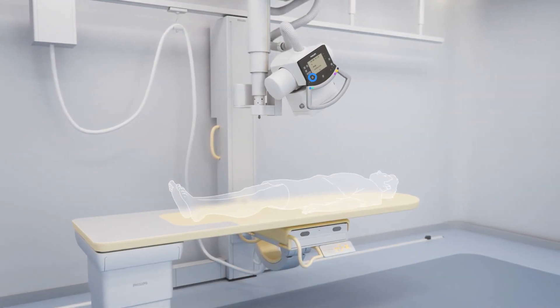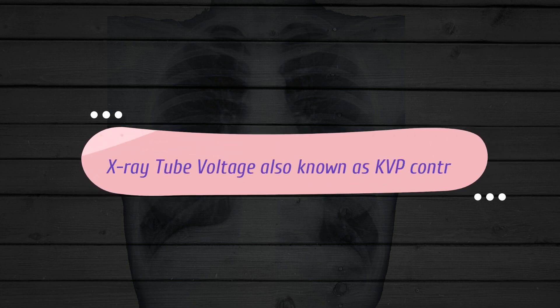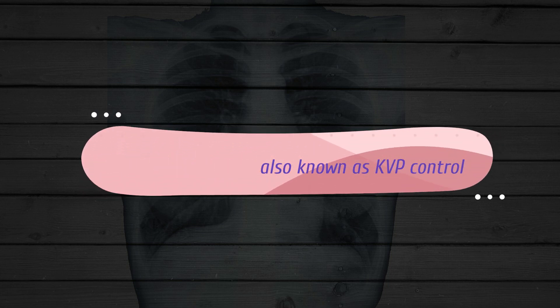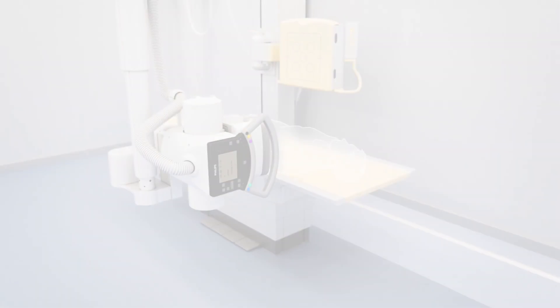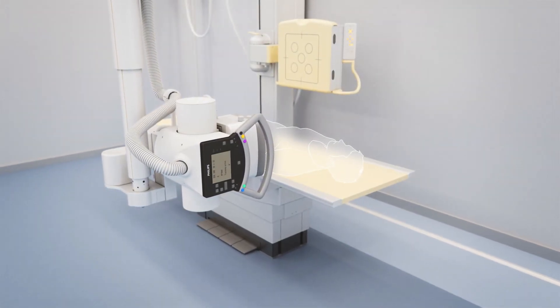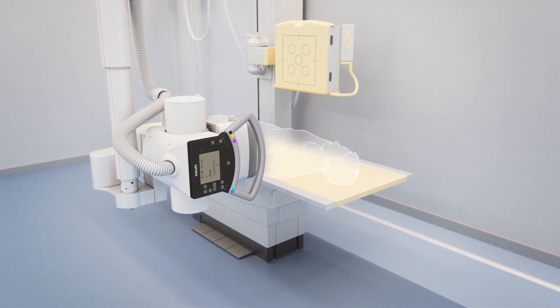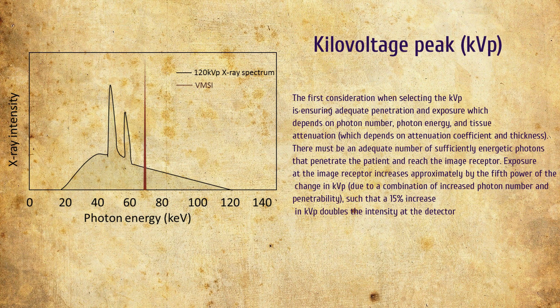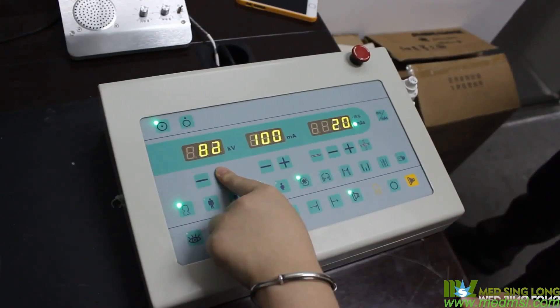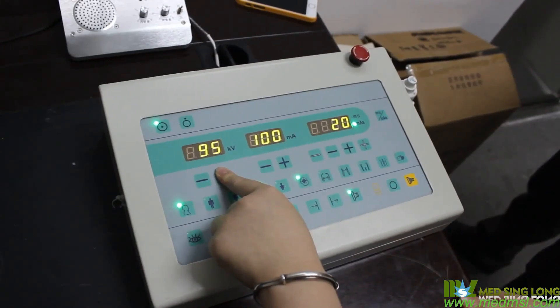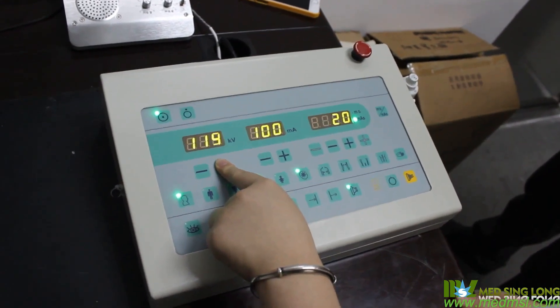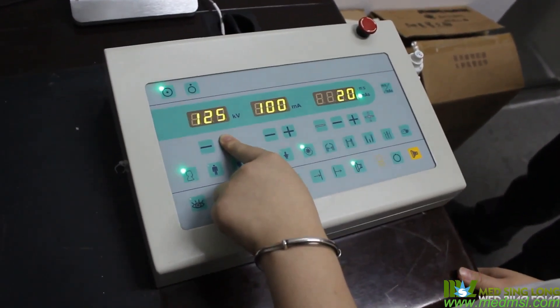Let's look into the effect of changing x-ray tube voltage, also known as KVP control. KVP refers to the maximum high voltage applied across an x-ray tube during the creation of x-rays. During x-ray generation, surface electrons are released from a heated cathode by thermionic emission. The applied voltage accelerates these electrons toward an anode target, ultimately producing x-rays when the electrons are stopped in the anode. Thus the KVP corresponds to the highest kinetic energy of the electron striking the target and is proportional to the maximum energy of the resulting x-ray emission spectrum.